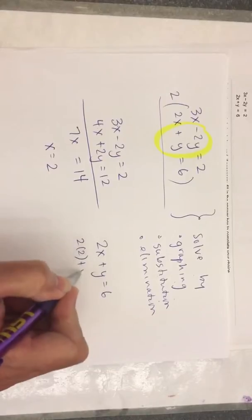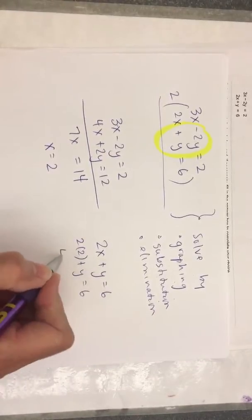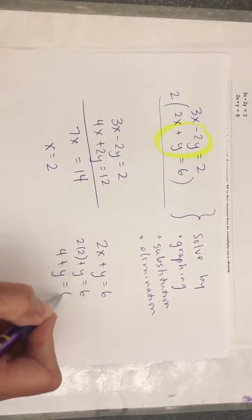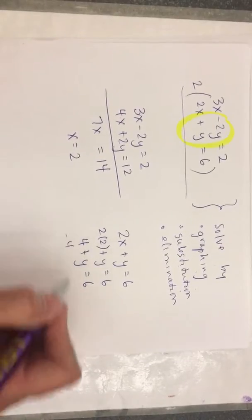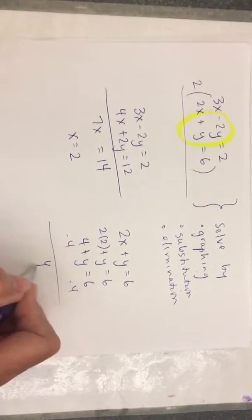So 2 times 2 plus y equals 6. 4 plus y equals 6. Subtract the 4. Well, y equals 2.